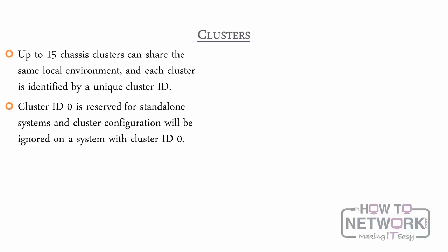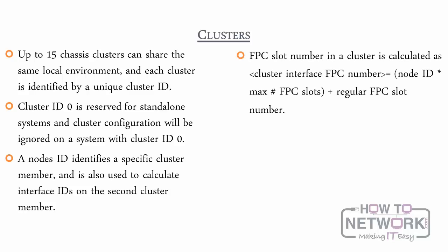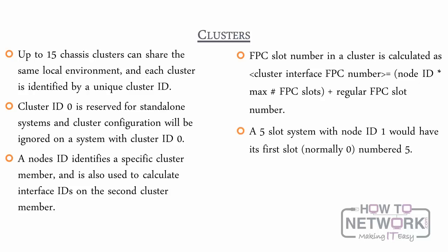A node's ID identifies a specific cluster member and is also used to calculate interface IDs on the second cluster member. The FPC slot in a cluster is calculated as: cluster interface FPC number equals node ID times max FPC slots, plus the regular FPC slot number. Using this formula, a 5-slot system with node ID 1 would have its first slot, normally 0, numbered 5.